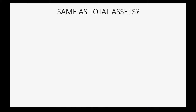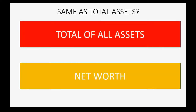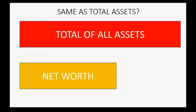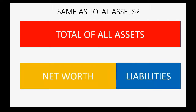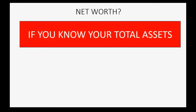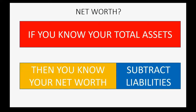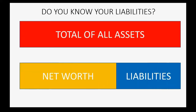Is that the same thing as total assets? Well, it could be. But the truth is, your net worth is reduced by the liabilities you have — the money that you owe at the moment that you're measuring your net worth. So if you know your total assets and you subtract out your liabilities, then you will know your total net worth.